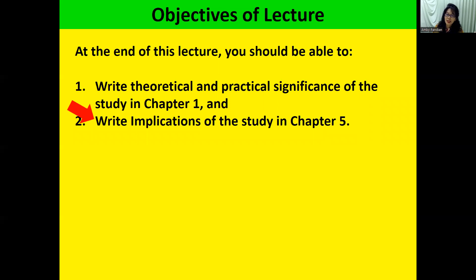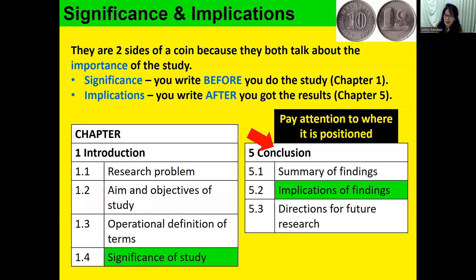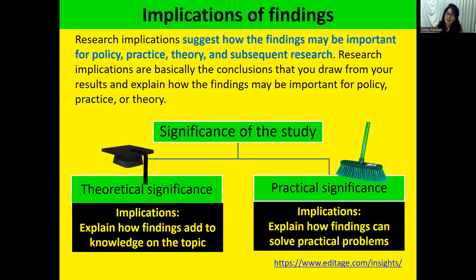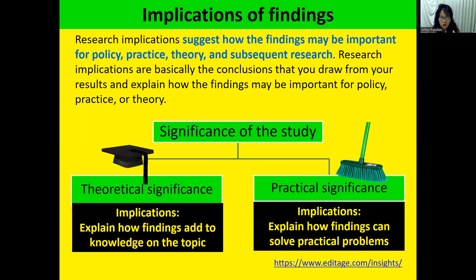Now we jump to the last chapter: implications of the study. Implications are positioned right after the results or findings. Implications also have theoretical and practical components. The word 'implications' is abstract, but it simply means the importance of the findings — whether important for government policy, for certain practices, or for theory and subsequent research. Theoretically, it is important because you have added new knowledge to the field. Practically, your findings can solve practical problems — and you can see how it connects back to chapter one.